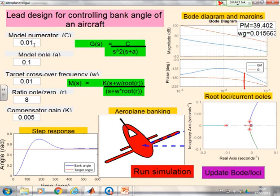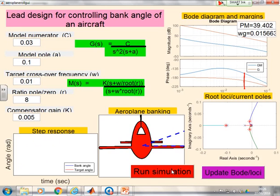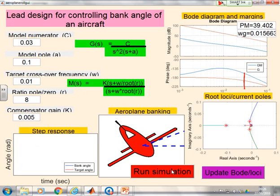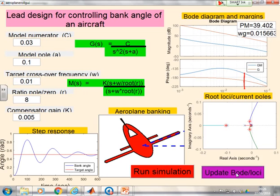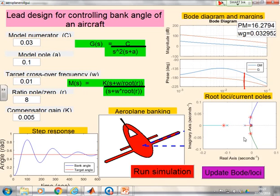What if I change the model numerator? So the gain, instead of being 0.01, is now 0.03. And now I run. And you'll see, of course, because I've changed the plane, that lead compensator is no longer a particularly good one. And if I update the Bode and the root loci, again, you'll see I've no longer got good margins. So the idea is you've got an interface that you can investigate lead compensation. You can change different parameters. And hopefully you can get an understanding.